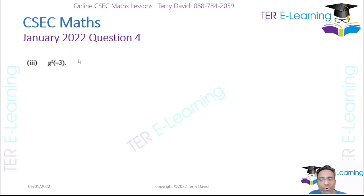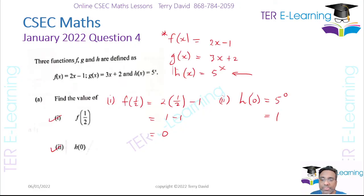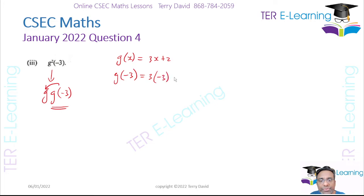This next one asks us to work out g²(−3). Some students will work out g(−3) and just square the answer — that's not correct. g²(−3) means g(g(−3)), so you apply g twice. First, work out g(−3): that's 3 × (−3) + 2 = −9 + 2 = −7.